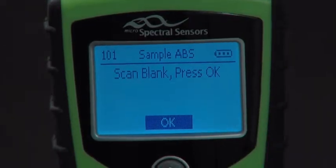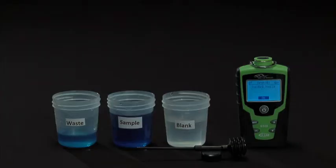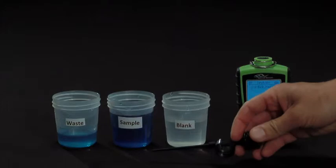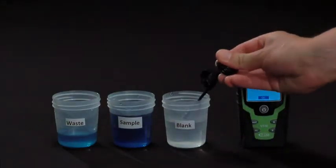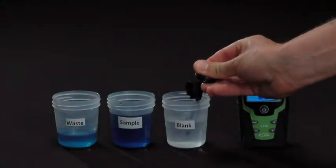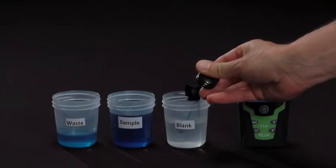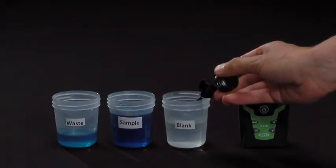The first step in the method is to scan a blank. Using the Samplet, we'll dip the tip of the Samplet into the blank, depress the bulb approximately three-quarters of the way, and slowly allow the bulb to expand and draw the blank into the chamber.